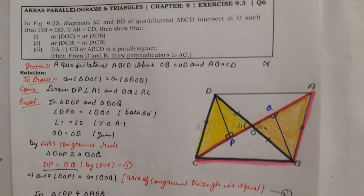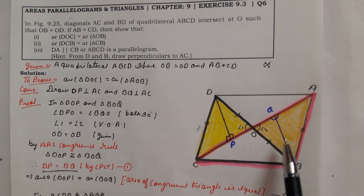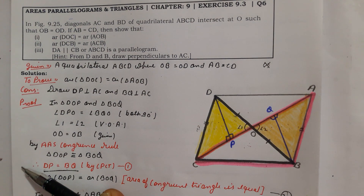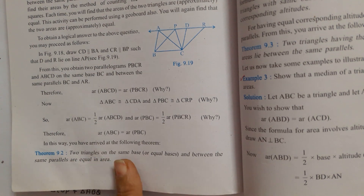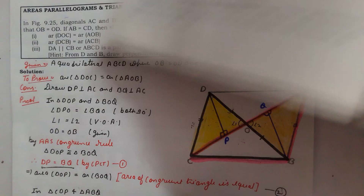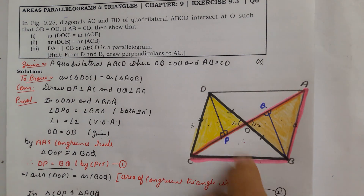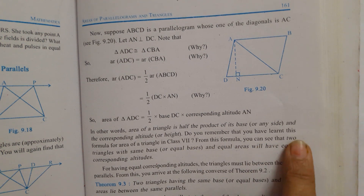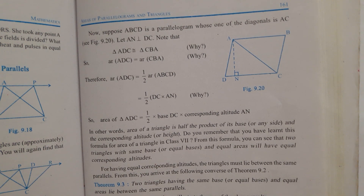For the third part, we need to prove DA parallel to CB, or that ABCD is a parallelogram. This is not directly a theorem but a statement from the book. From Exercise 9.2: two triangles on the same base and between the same parallels are equal in area. The converse states: two triangles with the same base and equal areas will have equal corresponding altitudes.